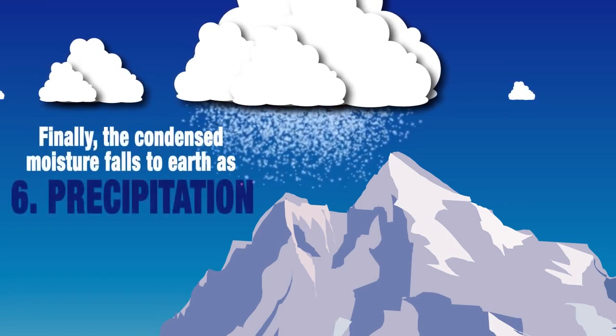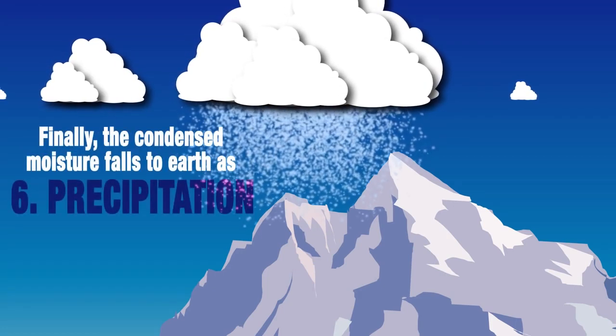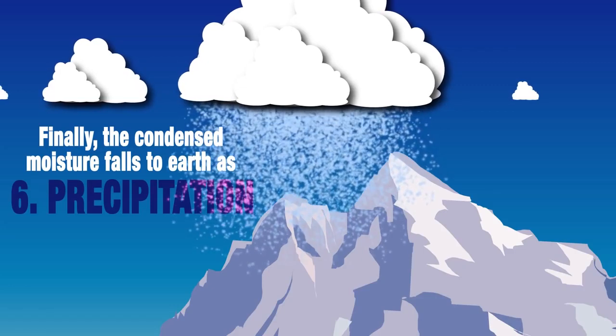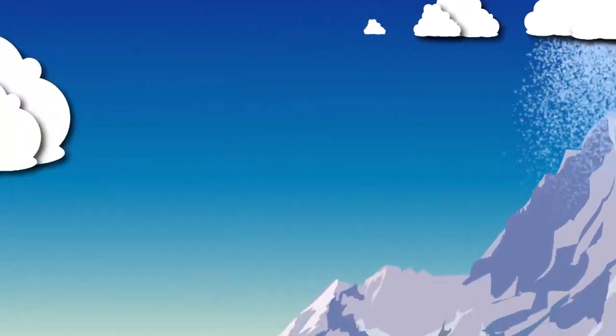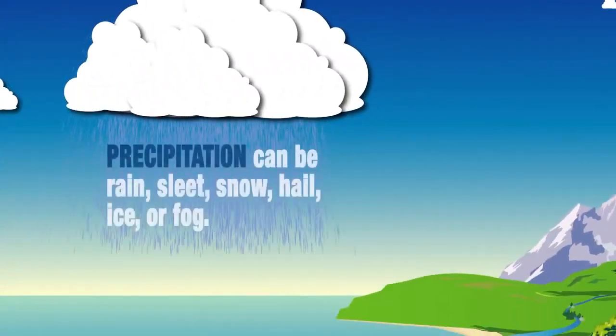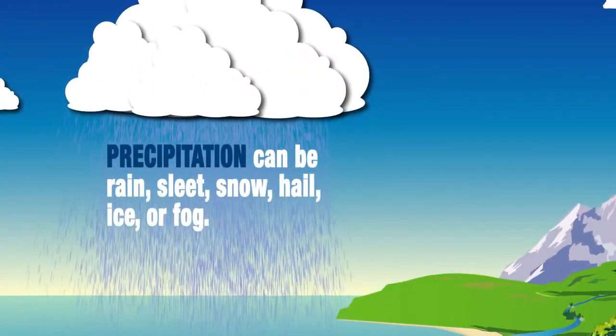Precipitation: when water falls from the sky in numerous different forms — rain, snow, and hail.